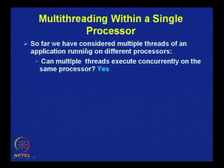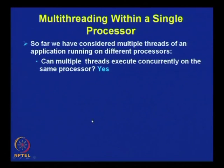Today we shall focus on something else. The question is: can multiple threads execute concurrently on the same processor? We have seen that for multiple processors or multi-core architectures, multithreading comes naturally and utilization of the processors is improved. But here we are posing a different question — we have a single processor. Is multithreading relevant in single processor architecture, or does it help in improving performance? All these questions will be answered in this lecture.